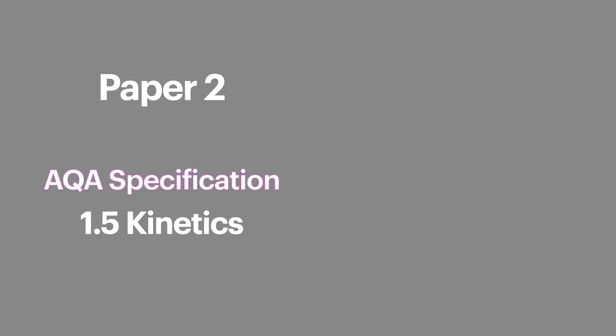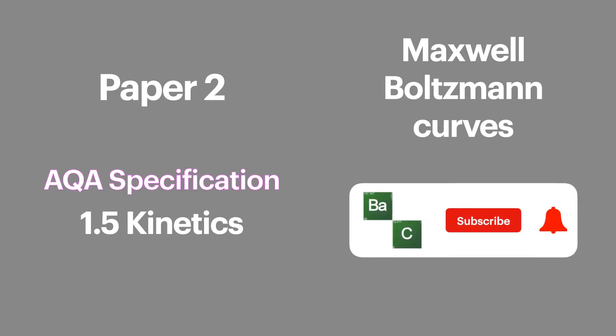Hello chemists and welcome to Bale's Chemistry. In this episode we're looking at Maxwell Boltzmann curves, and this is AQA specification 1.5 Kinetics and appears on Paper 2 of your final exams. If you're new to the channel please subscribe for more A-level chemistry content each week, and if you're already subscribed and finding these videos useful please share them with your friends and teachers.